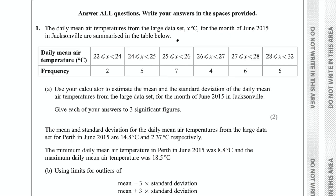Question 1 says the daily mean air temperatures from the large data set, x degrees centigrade, for the month of June 2015 in Jacksonville are summarized in the table below. Part A says use your calculator to estimate the mean and standard deviation of the daily mean air temperatures for the month of June 2015 in Jacksonville. Give each answer to three significant figures.